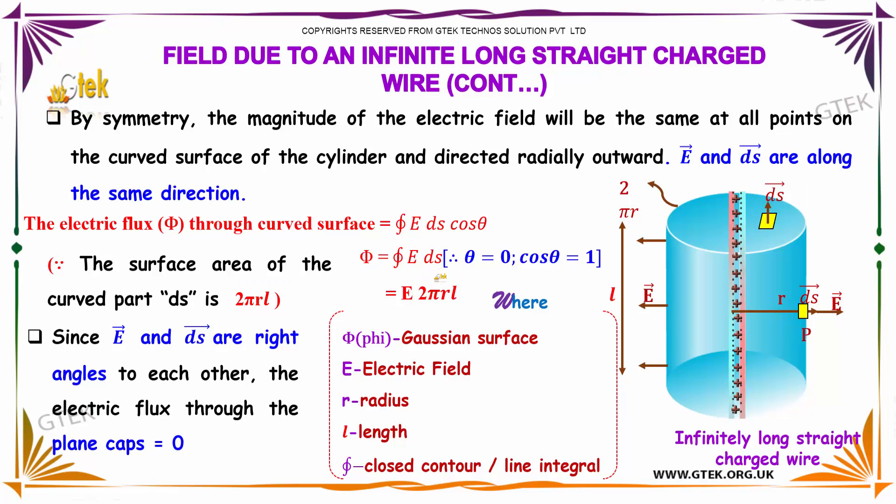Before we apply the value for ds, let us first solve for cosθ where θ equals 0. Substituting here, it becomes 1. So multiplying by 1, it becomes the line integral E·ds. Since we know the value for ds, we can substitute, so it becomes Φ = E × 2πrL.